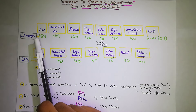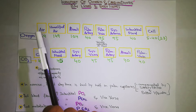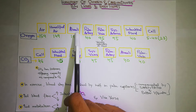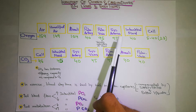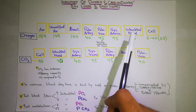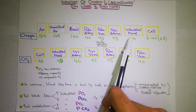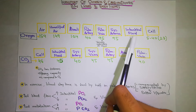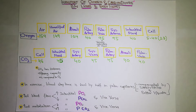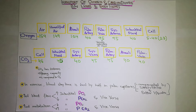تو یہ پورا اس کا pathway ہے - سب سے پہلے air میں تھی، پھر alveoli میں آئی، پھر blood میں آئی، پھر blood سے interstitial fluid کے اندر oxygen چلی جائے گی، اور پھر interstitial fluid سے cell کے اندر چلی جائے گی۔ It's very simple. اب پہلے میں نے آپ کو کہا تھا کہ oxygen will move from area of higher partial pressure towards area of lower partial pressure.